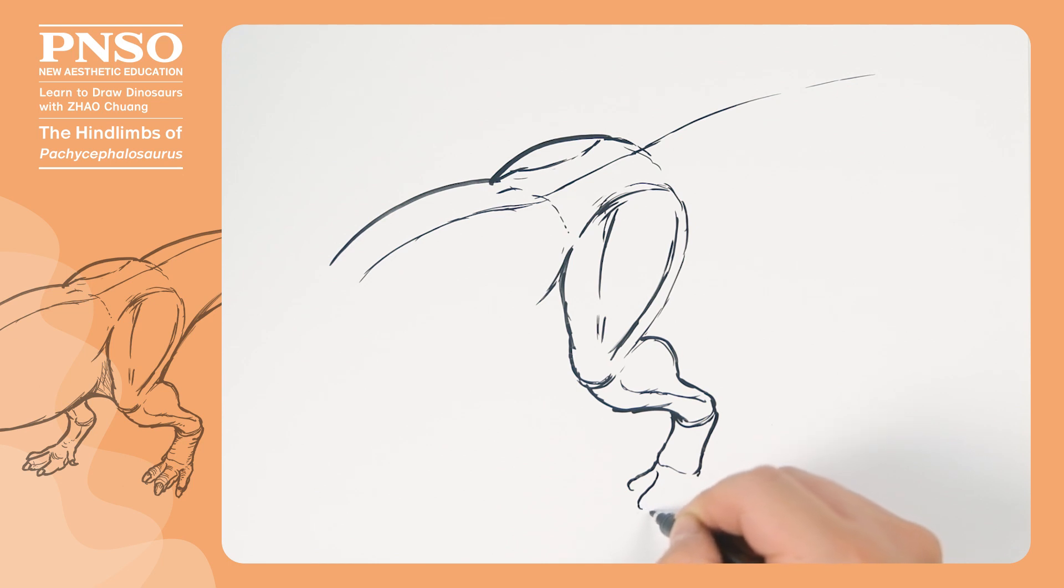It had four toes on its feet. Three functional toes were used for walking and had flat toenails at the ends. The other toe was small and left the ground when walking with a pointy toenail. We draw some textures on the surface of the toenails, some big folds on the back of the toes, and big pads on the underside of the toes.